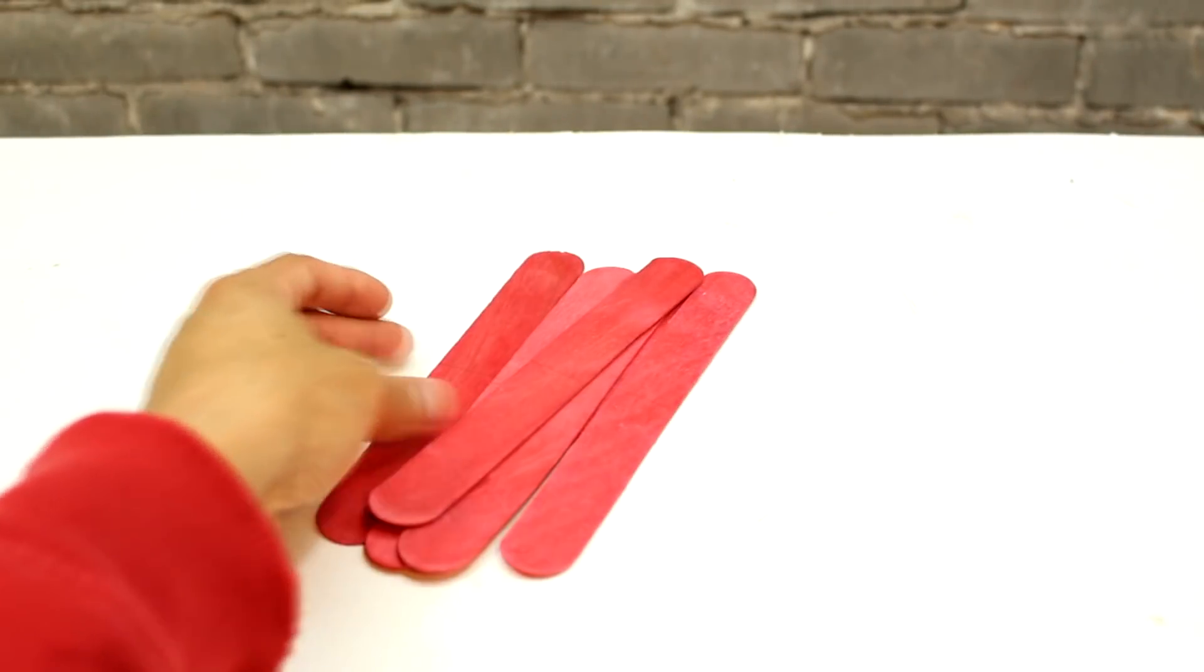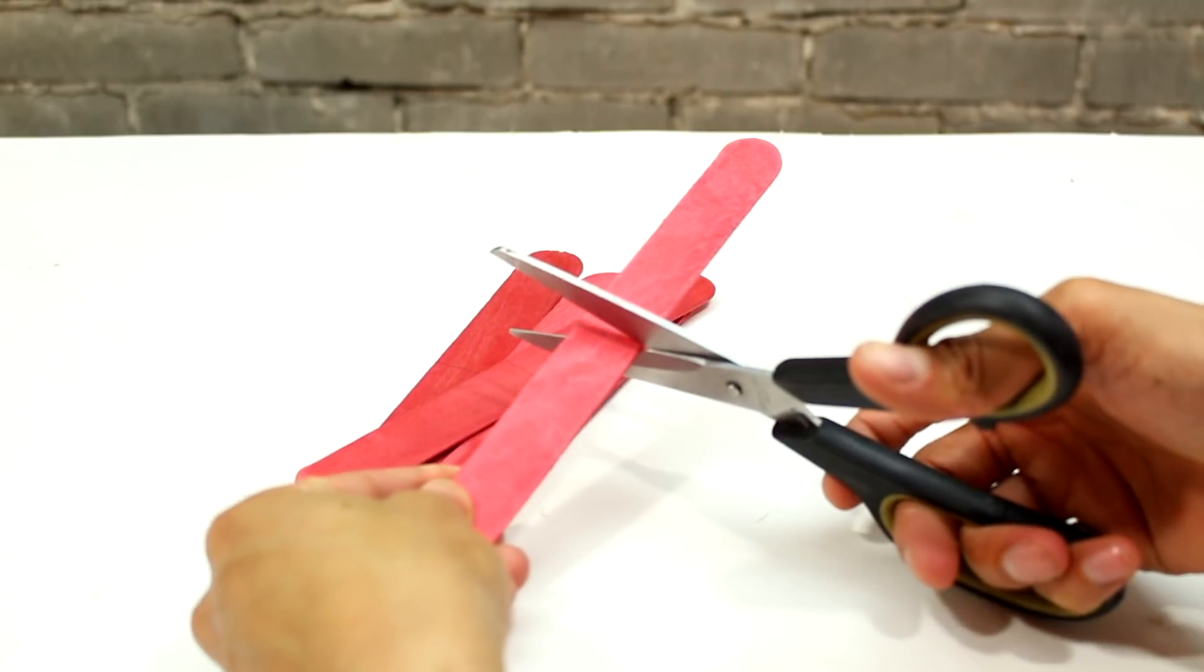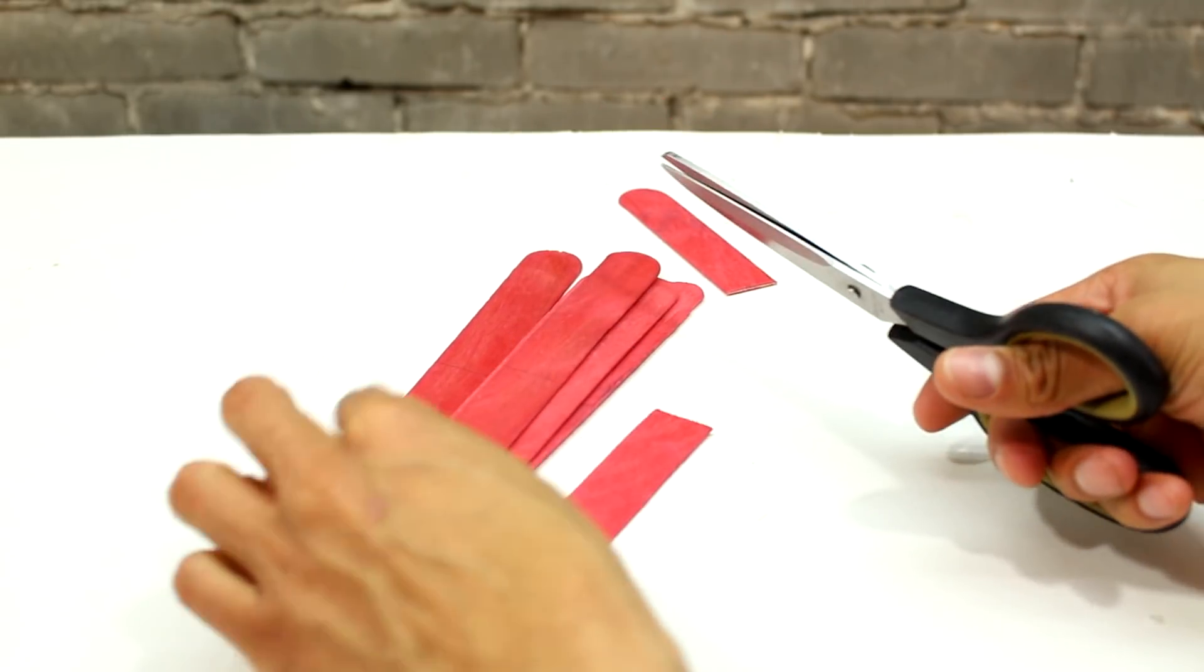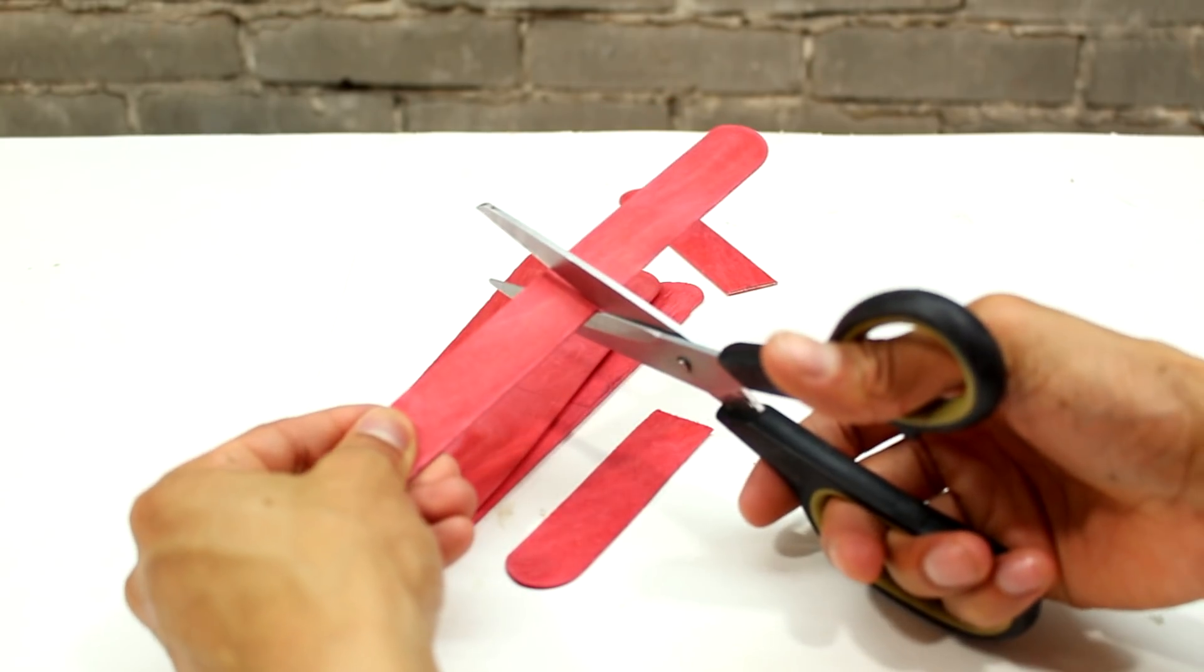Next we whip out the most important material of any DIY project, popsicle sticks. We're going to use these bad boys to make a solid frame. We'll chop them up real nice and glue them back together.